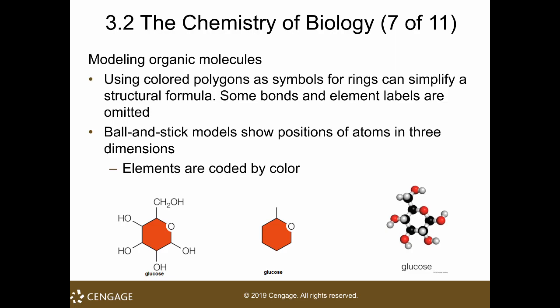Looking at the ball and stick model, we have this structural formula alongside the ball and stick model. Unlike the simplified formula, the ball and stick model writes every atom and every element. The carbons are the black ones, the hydrogens are white, oxygen is red, and nitrogen is blue. That is the usual conventional way of showing them.